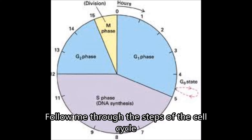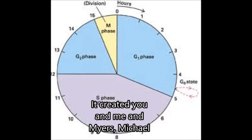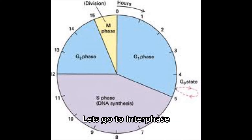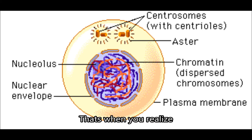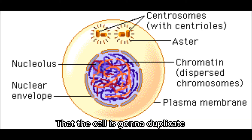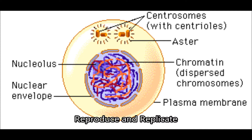We started out as two small cells, and then we went through cell division. Look now, follow me through the steps of the cell cycle — it created you and me. And before we even start, let's go to interphase. The cell's gonna get a raise in size. That's when you realize that the cell is gonna duplicate, reproduce, replicate.